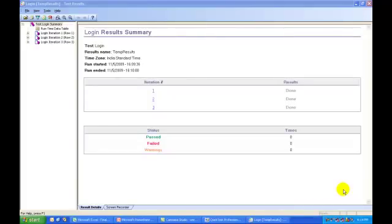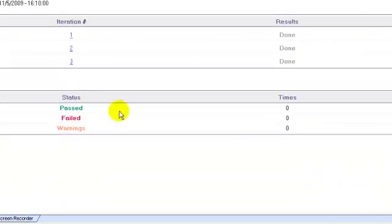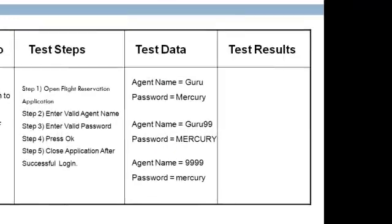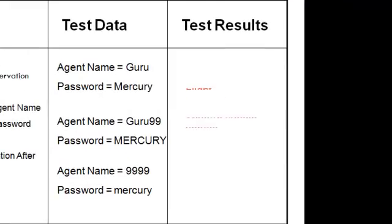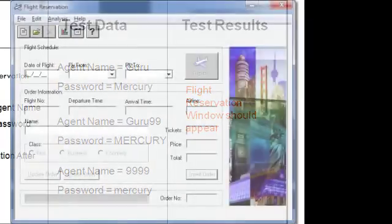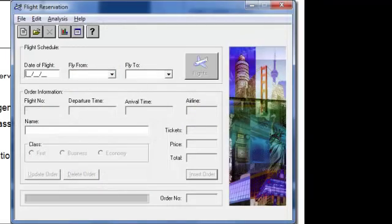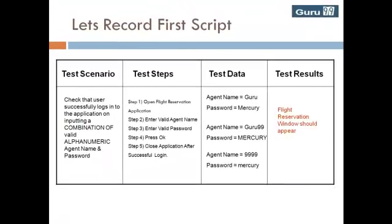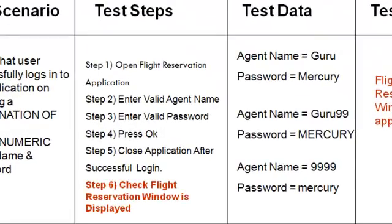You will have noticed that the results generated for our test scripts so far has no pass or fail status, without which our automation is incomplete. The expected test result for our scenario should be that the flight reservation window should appear after entering valid username and password. To accomplish this, we need to record an additional step — Step 6: Check flight reservation window is displayed.